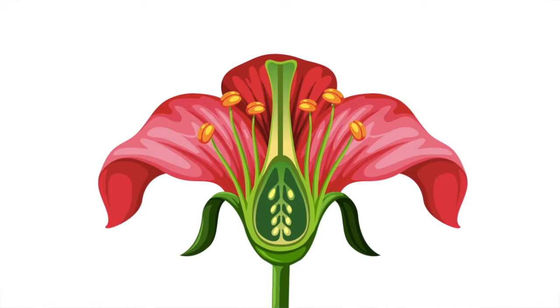Flowers are the reproductive organs of a plant. Anther and filament are the male parts of a plant. We call this the stamen.